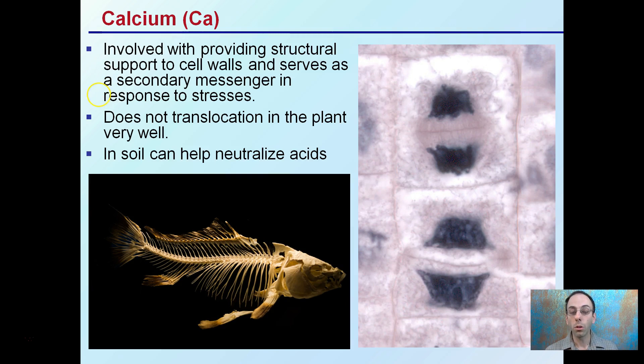Soil can help neutralize acids when calcium is added. It can be commonly found in bones, and again, that cell wall is a very important component of plant cells.